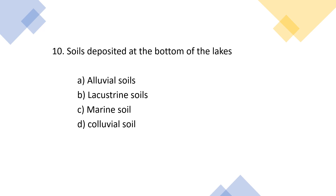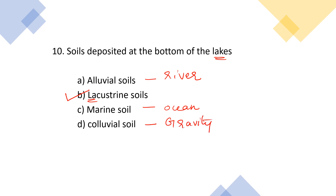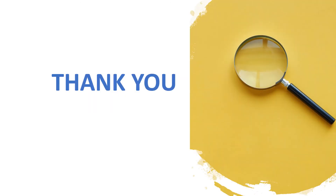Tenth question: soils deposited at the bottom of lakes are — A: alluvial soils, B: lacustrine soils, C: marine soil, D: colluvial soil. The answer is option B, lacustrine soils — 'L' for lake, 'L' for lacustrine. Alluvial soils are deposited by rivers, marine soils are ocean deposits, and colluvial soils are deposited by the action of gravity. That's all for today's session; more objective questions will be discussed in coming sessions.